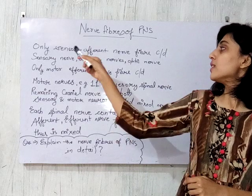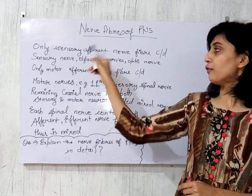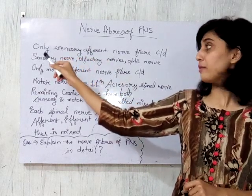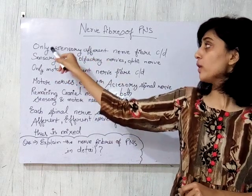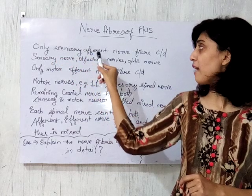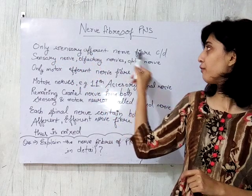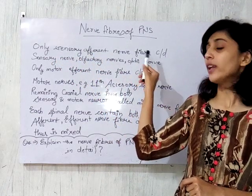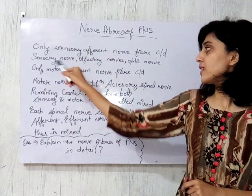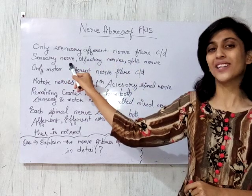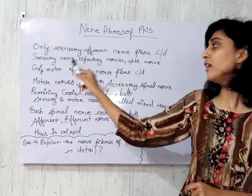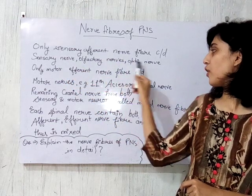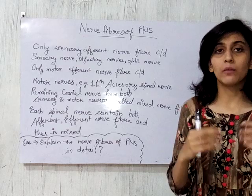The very first is your sensory nerve fiber. Sensory nerve fibers are those when only sensory afferent nerve fiber is present — we will be calling that a sensory nerve. Examples are your olfactory nerves and optic nerve.